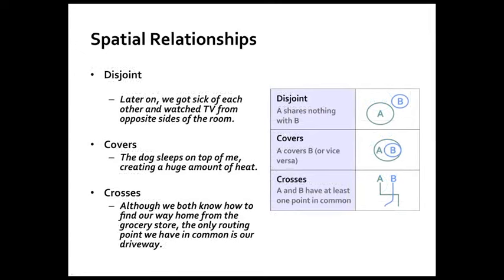Then you have relationships like disjoint. That's where A shares nothing with B. It could be that after that happens you're kind of sick of each other and you watch TV from opposite sides of the room. You're not sharing anything at that point. You could also have, if you're a dog owner, A covering B. The dog sleeps on top of you creating a huge amount of heat and being really annoying all night.